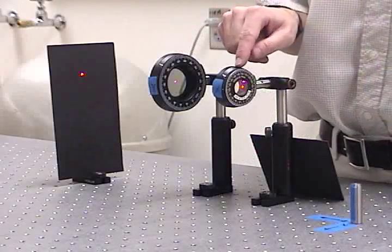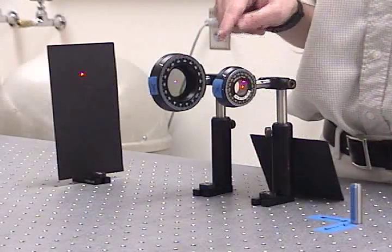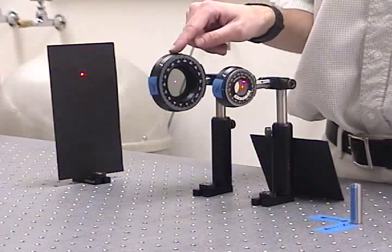At the appropriate angle, the quarter wave plate will turn the elliptically polarized beam into linearly polarized light, which will then be extinguished with the polarizer.